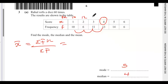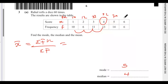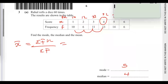Continuing the fx calculations: 4 × 13 = 52, 5 × 14 = 70, and 6 × 6 = 36. Now add all these values together and divide by the total frequency. Let's use a calculator to add them up.